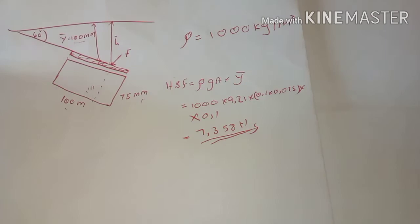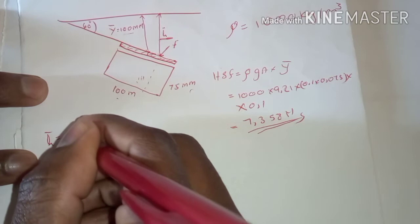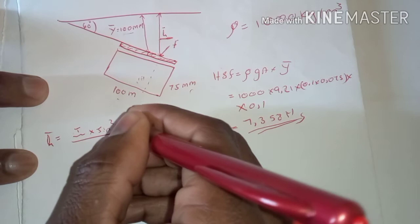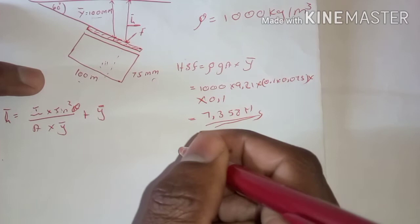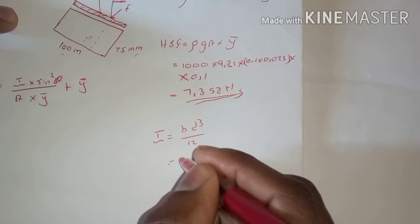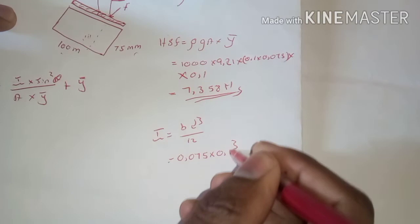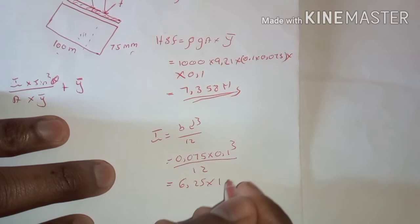They also said we must calculate its position, which will be h-bar. h-bar is given by: moment of inertia times sine squared theta, divided by area times y-bar, plus y-bar. We are dealing with a rectangle, so the moment of inertia is I = pd³/12 = (0.075 × 0.1³) / 12, which gives us 6.25 × 10⁻⁶ m⁴.